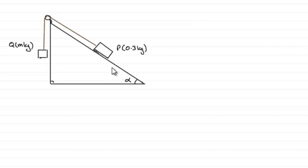So just to recap, we've got our two particles then, P mass 0.3 kilograms and Q with a mass of m kilograms. And they're attached by this light, inextensible string passing over a smooth pulley. And particle P is moving up this rough plane.